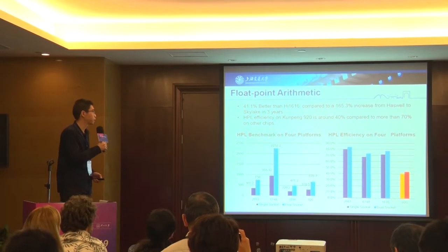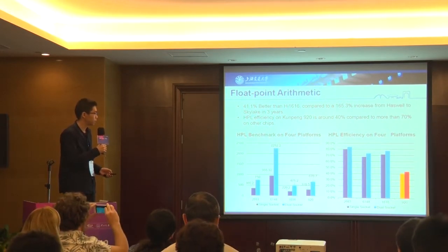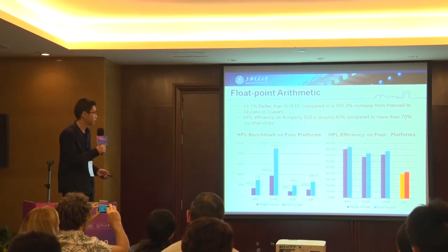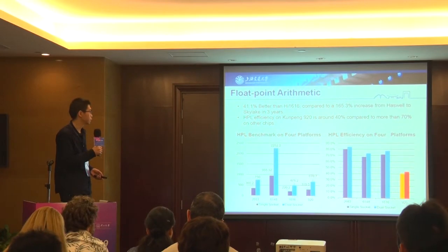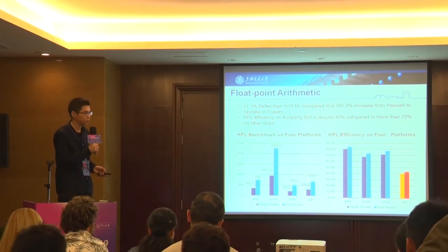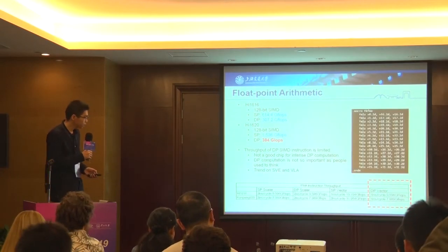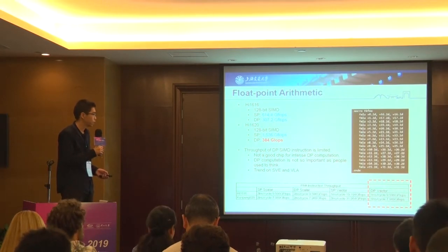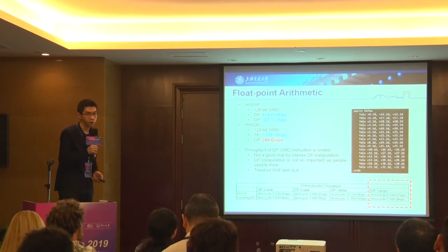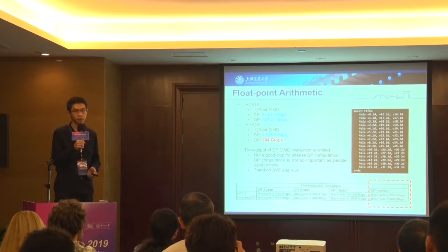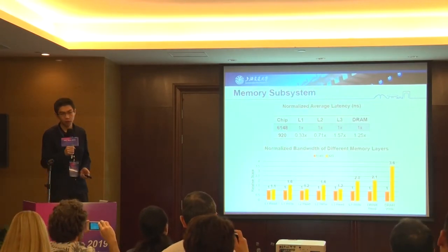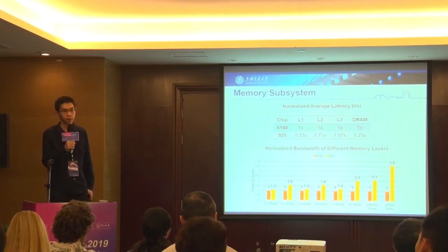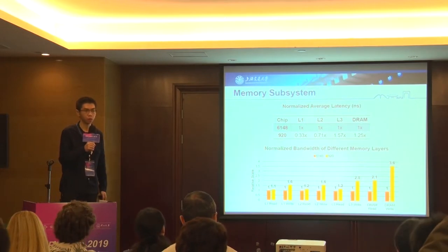Here comes the floating point arithmetic performance. We can notice that although Kunpeng 920 has been improved from the 1616, it still has strong problems on HPL efficiency. We wrote assembly code to verify and locate the problem, and found that its double precision vector extraction is limited. After communicating with Huawei's engineers, they said this is not a design flaw but is due to some limitation. So when you try to do intensive double precision computation on Huawei's chip, it won't be better than Intel's chip.